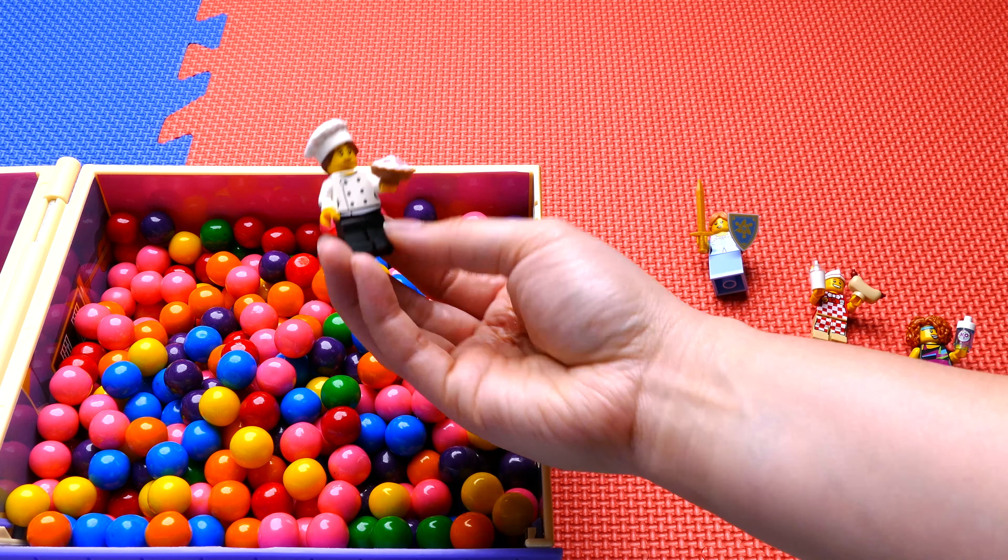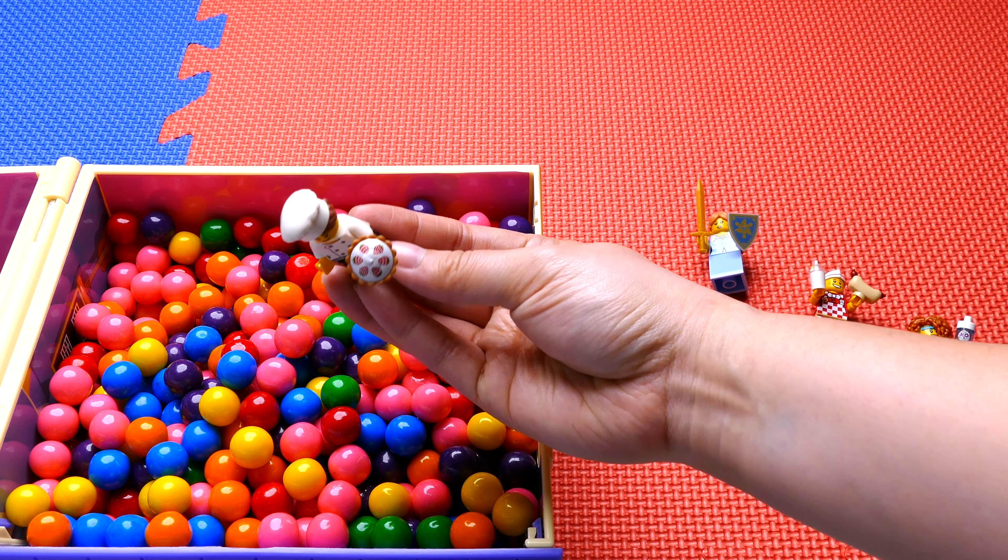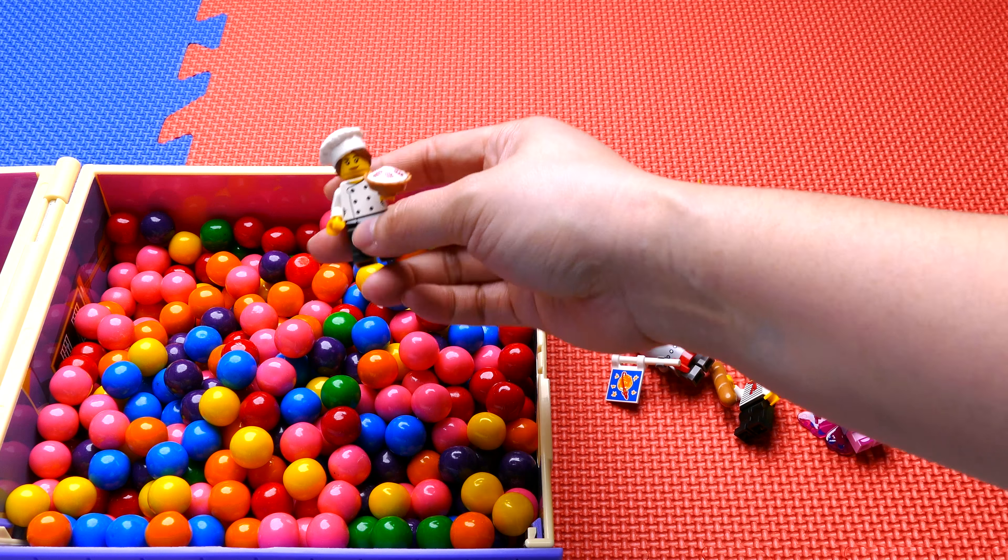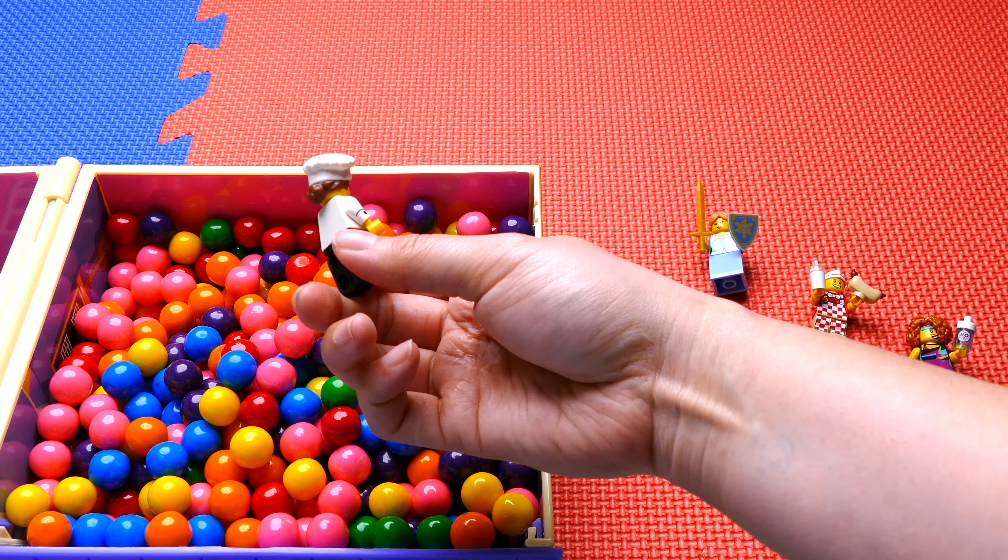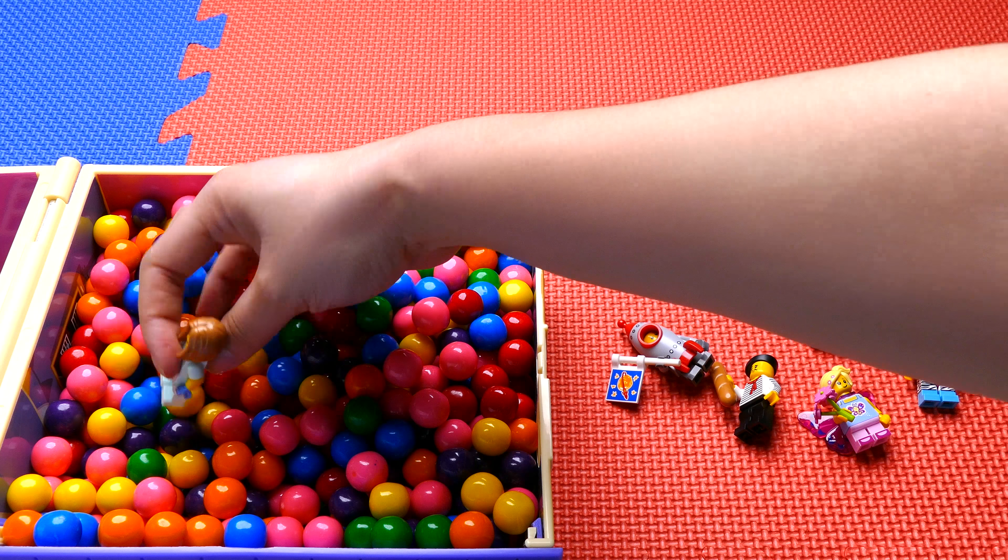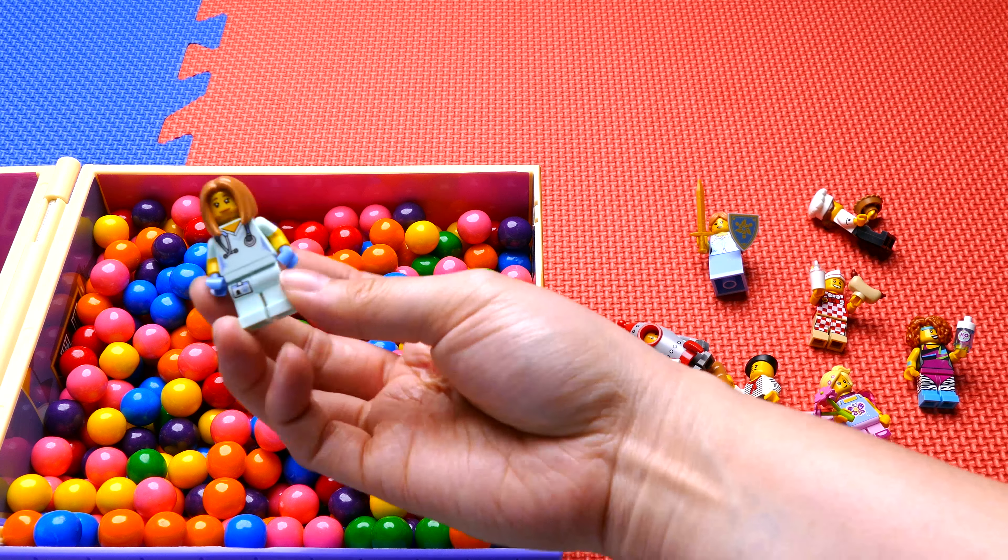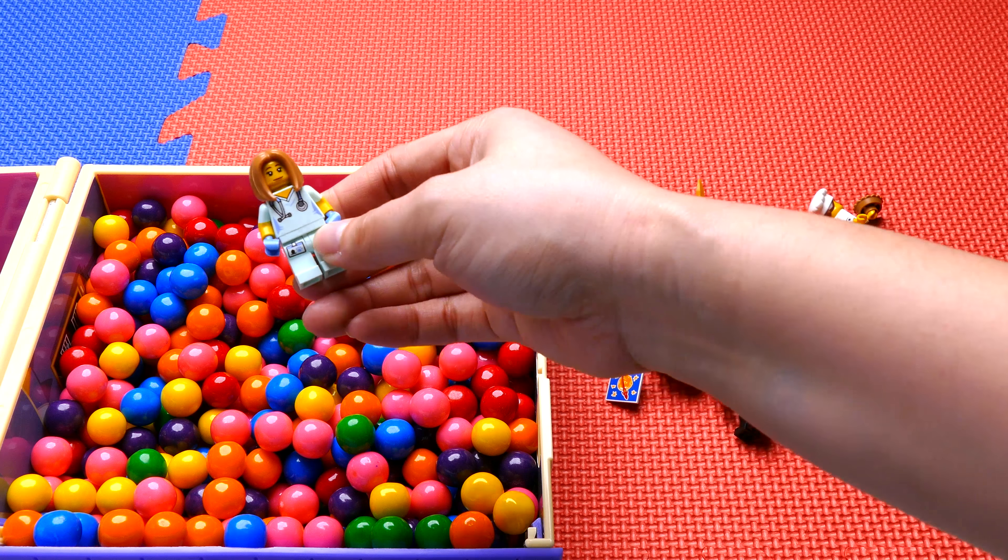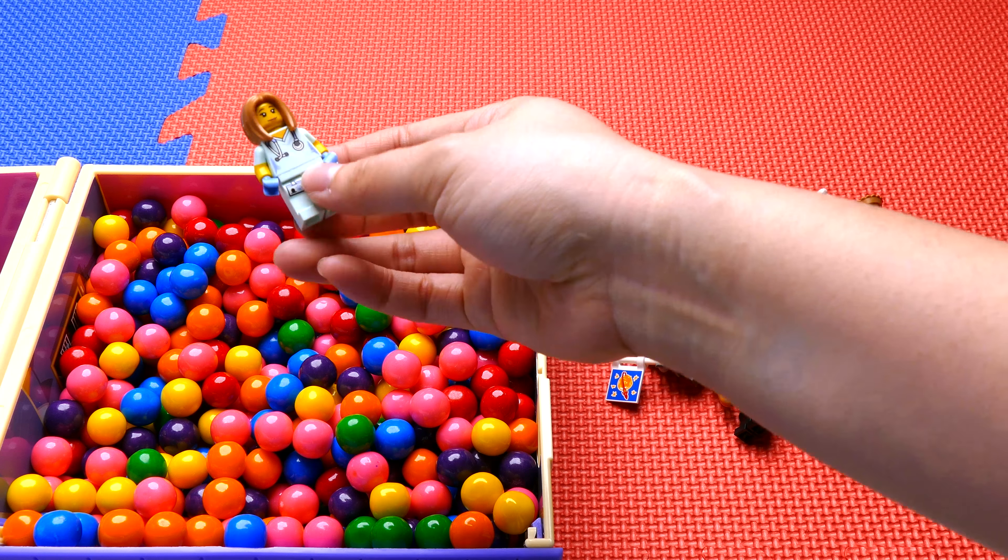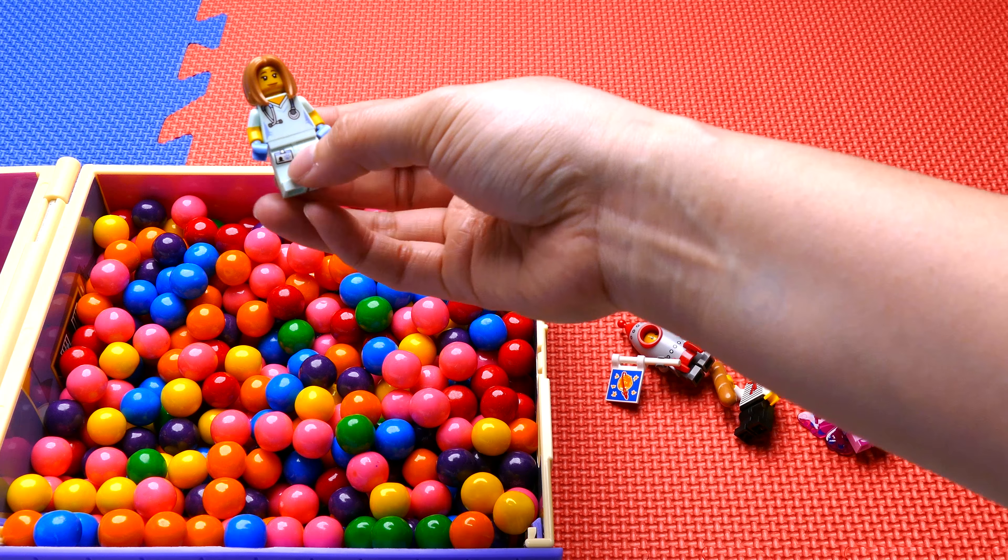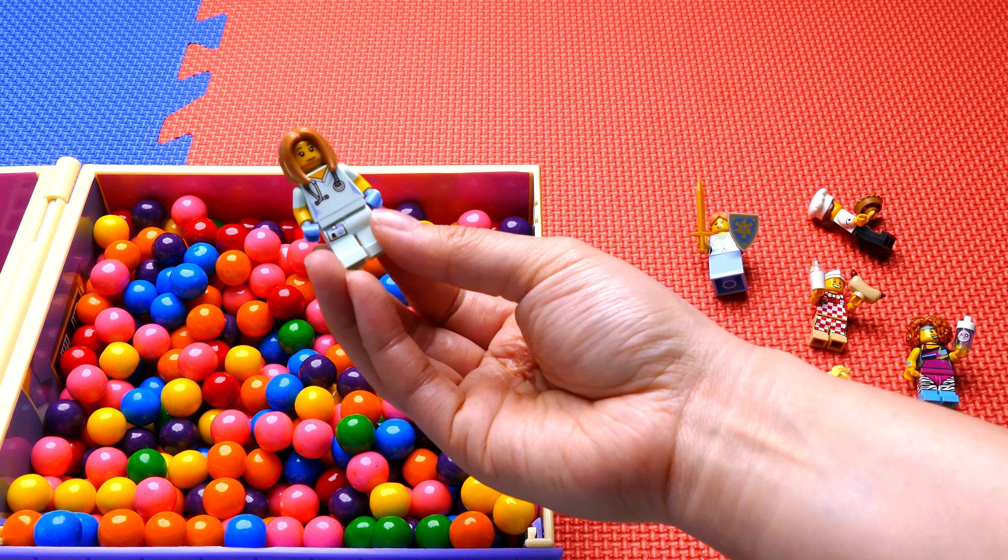This is Gourmet Chef. She makes very yummy pies and what she's holding is a strawberry pie. She has a little chef hat on and chef jacket. This is Veterinarian. She has a bunny that she comes with. She has a little stethoscope and she's wearing her gloves and she has her badge. Let's see if we can find her bunny later on.